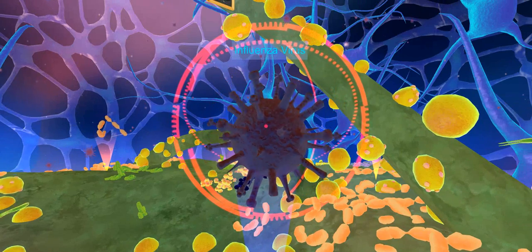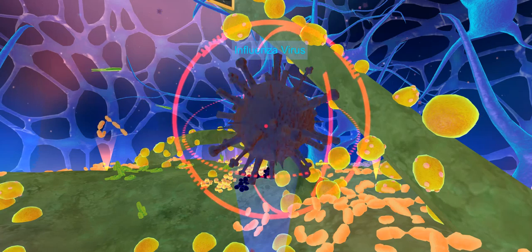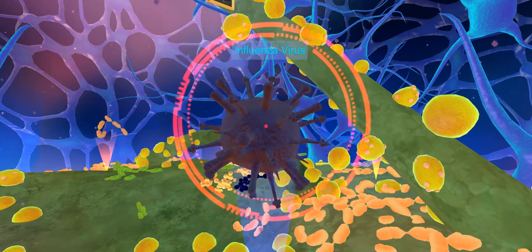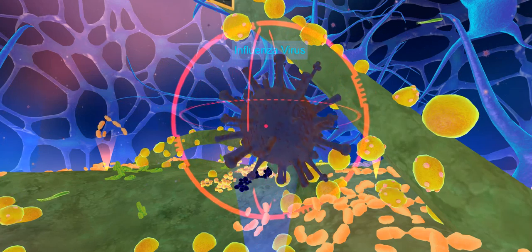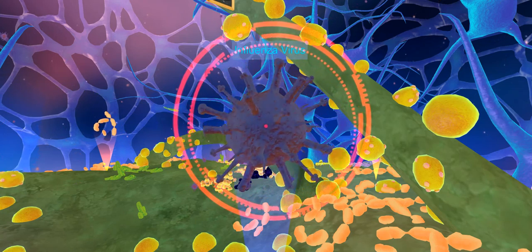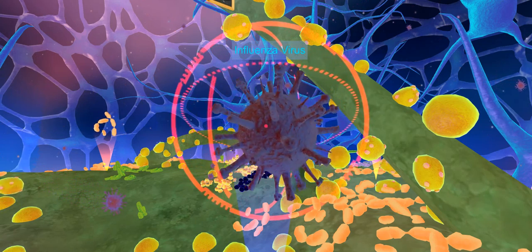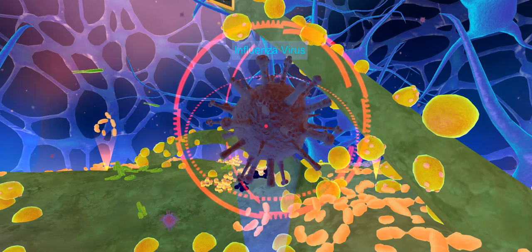The flu virus includes human flu virus and animal flu virus. Human flu viruses are the pathogen of the flu and are divided into three types, A, B, and C, among which the type A viruses are the most virulent human pathogens and have caused the most severe pandemic disease in history.